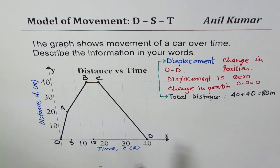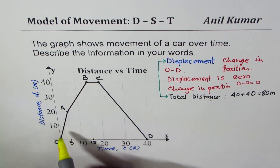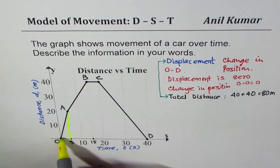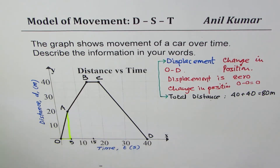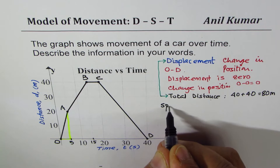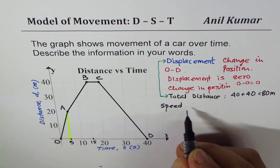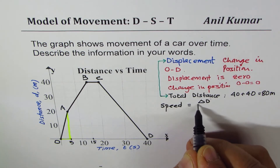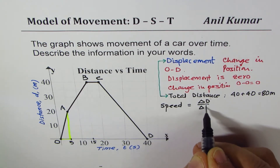When describing the graph, we can find a few more things. If we look from O to A it is a straight line, and if you find the slope of that line it gives us the speed. Speed is change in distance over change in time — let me call this delta D over delta t.